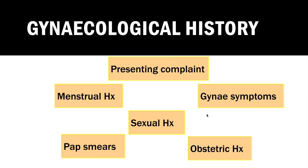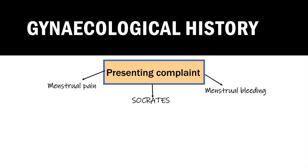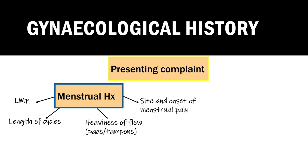Back to the clinical. The GP asks you to take a history and you think through the main components most relevant to gynae symptoms. You start with the presenting complaint and use the SOCRATES mnemonic to ask more about the menstrual pain, then adapt the same questions to find out more about the bleeding. Starting with a menstrual history, you ask for the date of Amy's last menstrual period, the length of her average cycles, how many soaked tampons or pads she uses on her heaviest days, and whether she notices any large clots. You also ask when during the cycle she experiences pain and whereabouts she feels it.